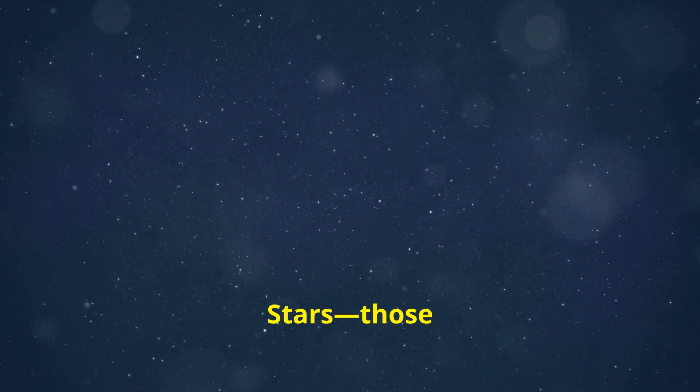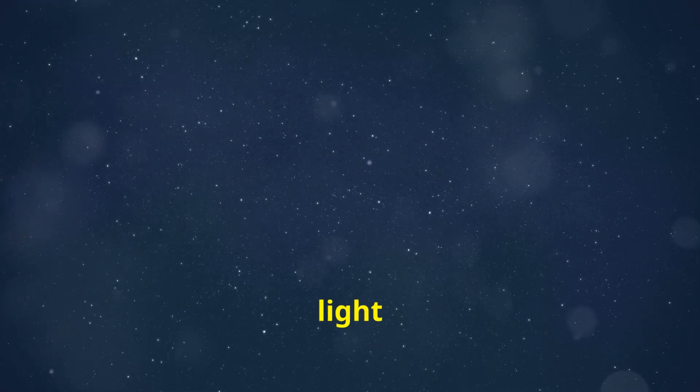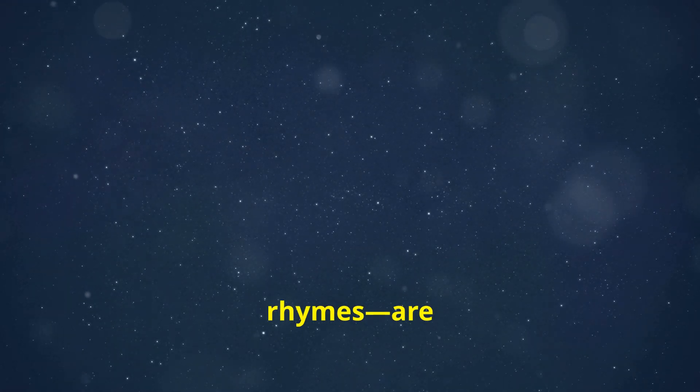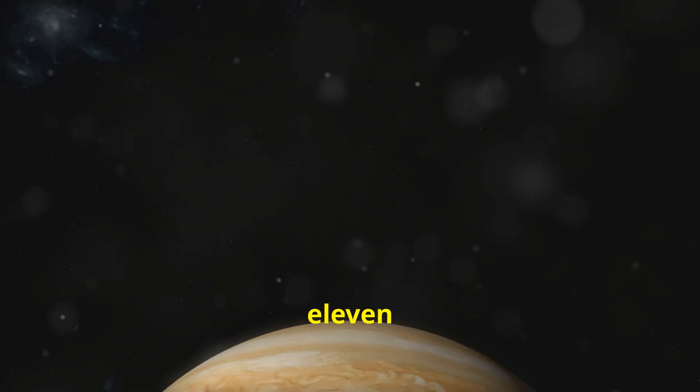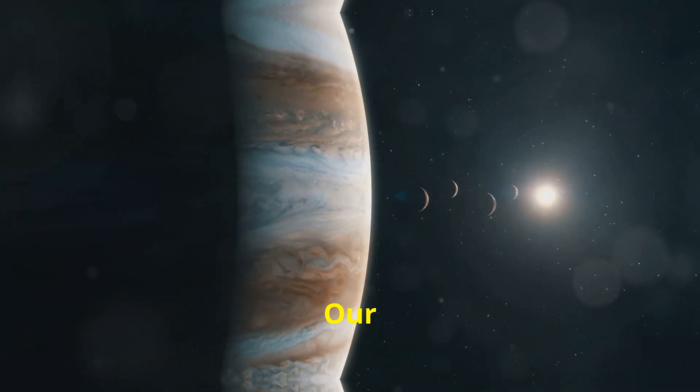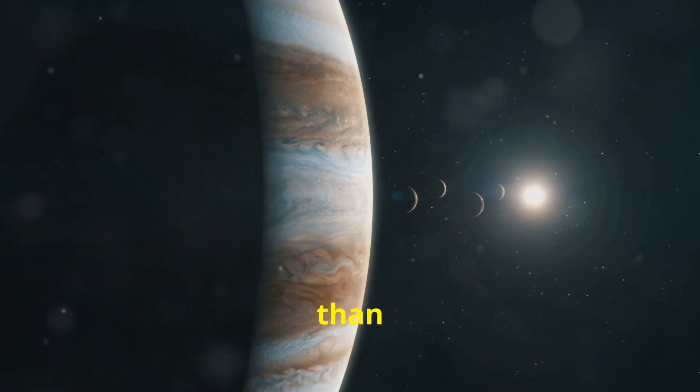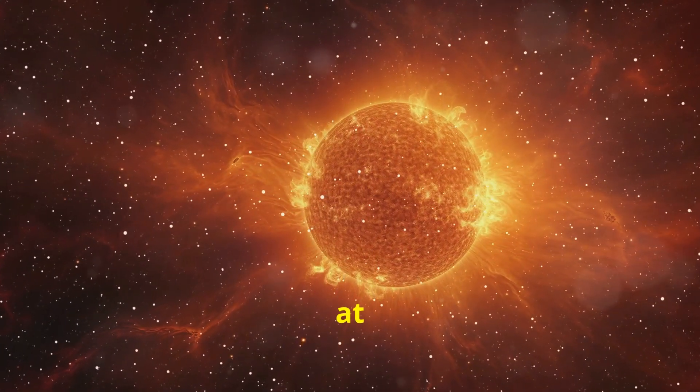The stars, those beautiful, twinkling little orbs of light found in children's nursery rhymes, are unfathomably more massive and powerful than nearly all planets. Jupiter is roughly 11 times wider than Earth. Our Sun is roughly 10 times wider than Jupiter. And our Sun is, at best, an average star.